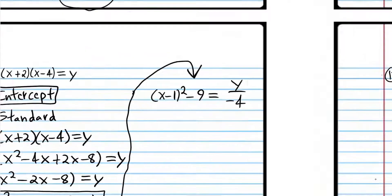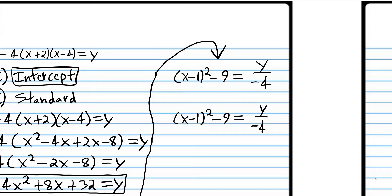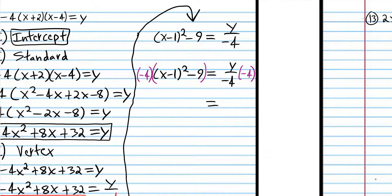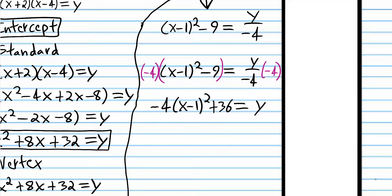I'm going to subtract 9 from both sides, which puts a 9 on the other side. We have negative 4 under the y, so we need to get rid of that. We're going to multiply both sides of the equation by negative 4, which will cancel out the 4 on the right side. Using the distribution property: negative 4 times the power expression, then negative 4 times negative 9 is positive 36. And so that is vertex form. If you got that answer, good job.